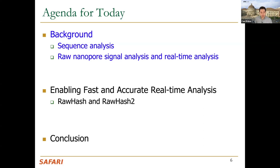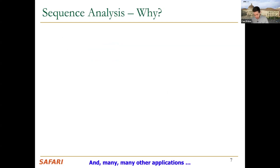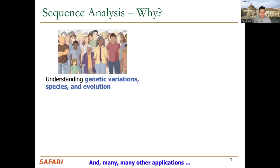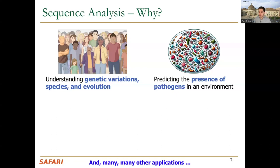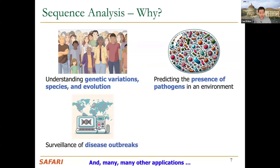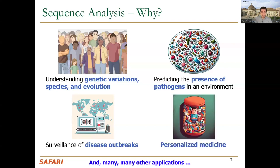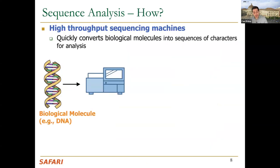Sequence analysis is important for many reasons: understanding genetic variations, species, health, and evolution; predicting the presence of certain pathogens harmful to health; surveillance of disease outbreaks — as experienced recently with COVID-19; and enabling personalized medicine. Since sequencing data is very personalized and critical to health, it has many other applications as well.